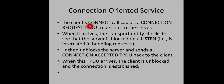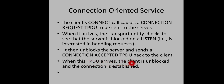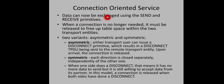In detail: the client issues a connect primitive, causing a connection request TPDU to be sent to the server. When it arrives, the transport entity at the server checks whether the server is already blocked on a listen. Only if it is, the server is unblocked and a connection accepted TPDU is sent back to the client. Upon receiving this TPDU, the client is unblocked, the connection is established, and data can be exchanged using the send and receive primitives.